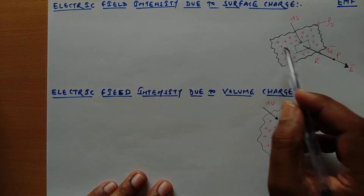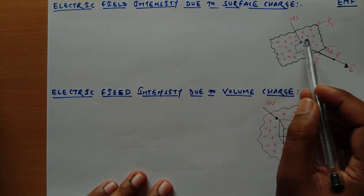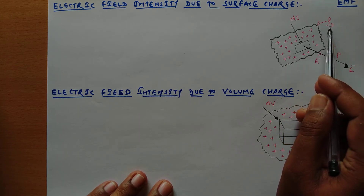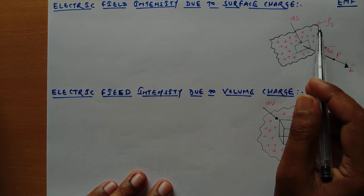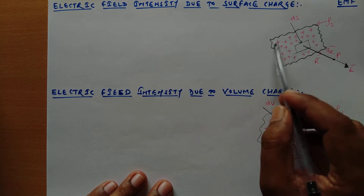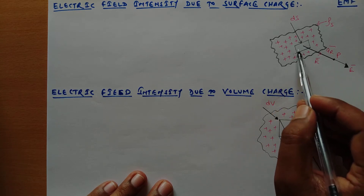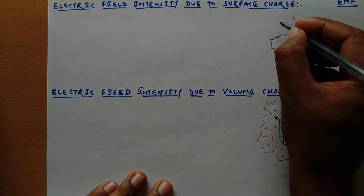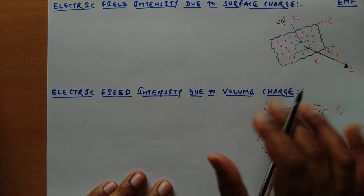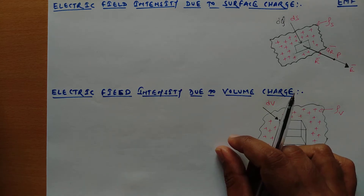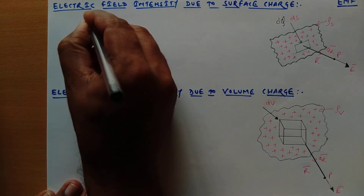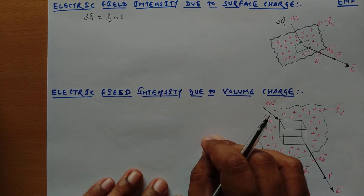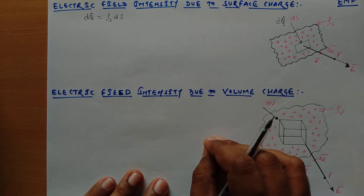As you can see, I have taken a sheet and in this sheet there is a distribution of charges. We have taken the charge density — the surface charge density is defined as ρs. Now in the whole sheet, if we take a differential amount of the surface ds, this differential amount of surface carries the differential charge dq. We can define this differential charge dq as ρs times ds.